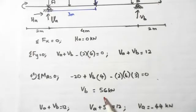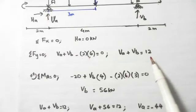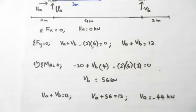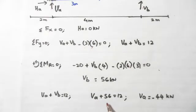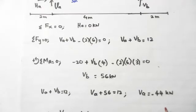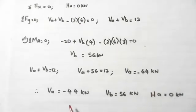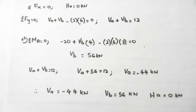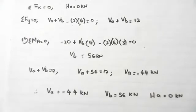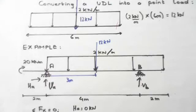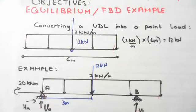Now that we know VA plus VB equals 12 and VB equals 56 kilonewtons, we substitute to find VA equals negative 44 kilonewtons. So our final results are: VA equals negative 44 kilonewtons, VB equals 56 kilonewtons, and HA equals zero kilonewtons.